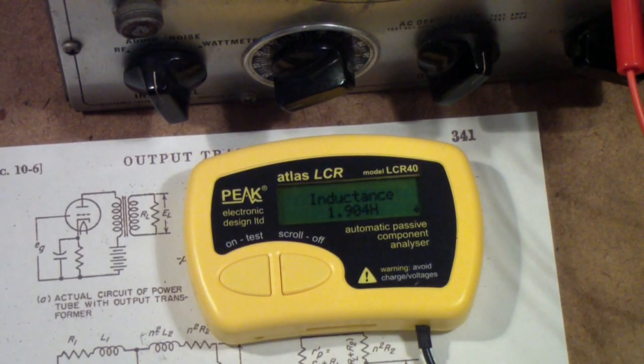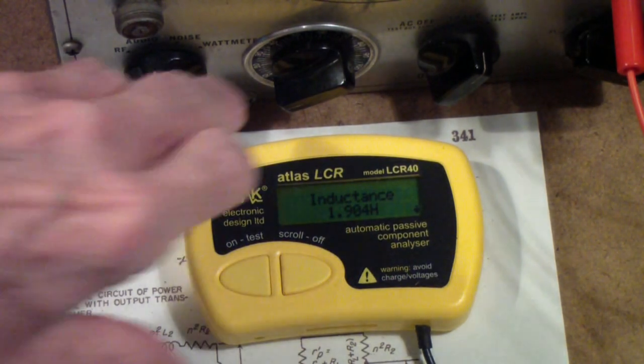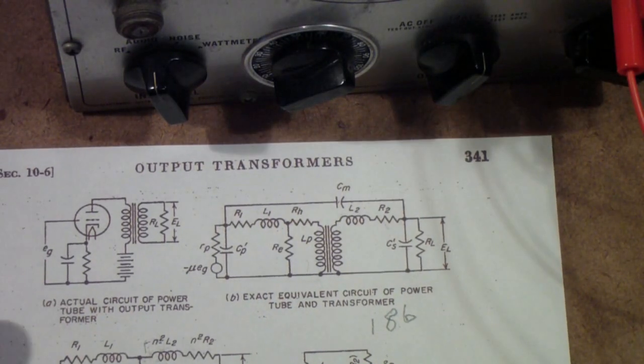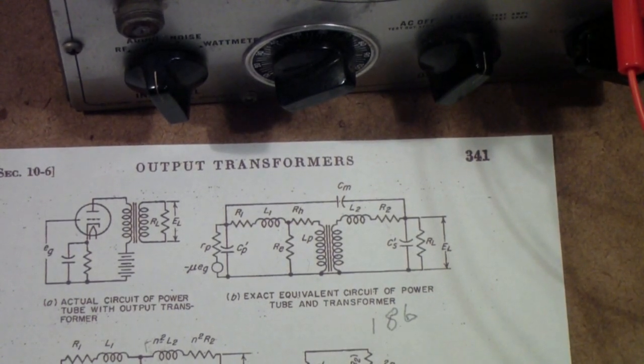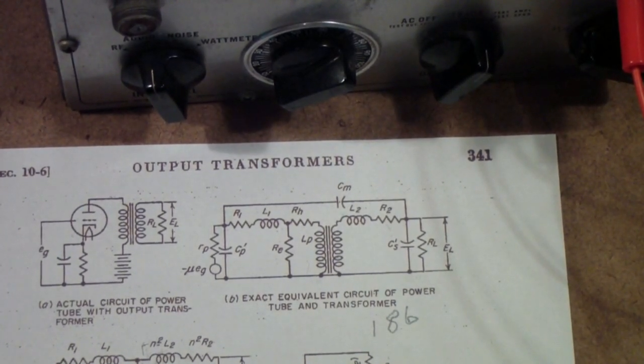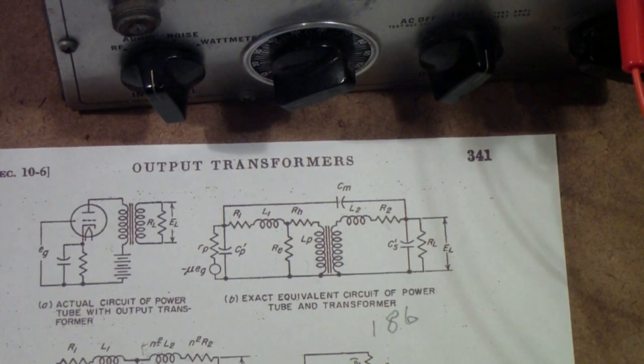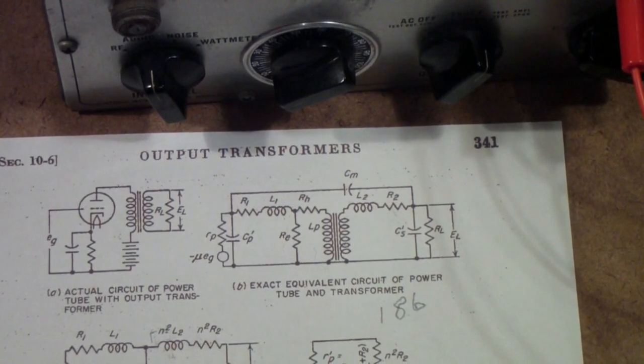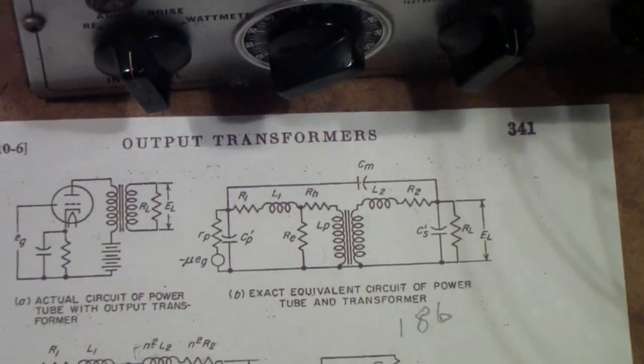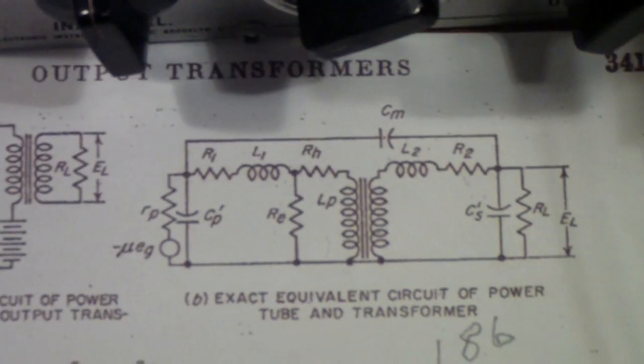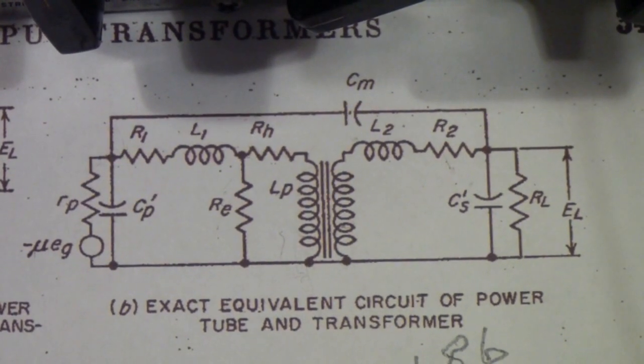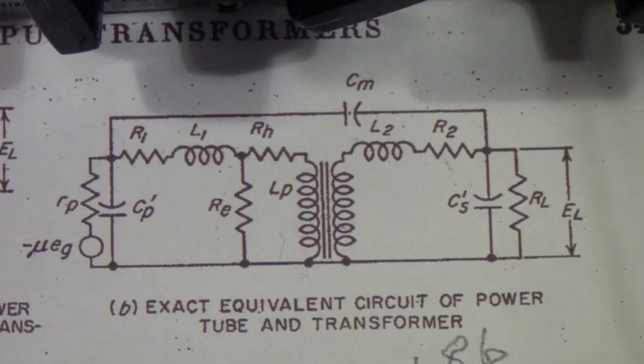So that you'll know where I'm going here, let me show you a page from Terman's Electronic and Radio Engineering. This is page 341 of the 1955 edition. You'll find this in other books, the Radiotron Designer's Handbook and Eastman's Fundamentals of Vacuum Tubes. It is probably the most widely used equivalent circuit of an output transformer.